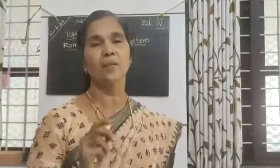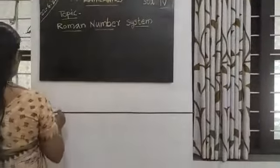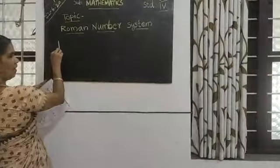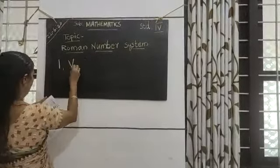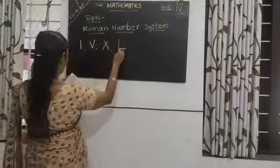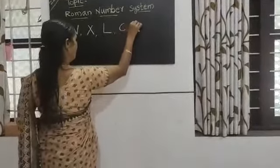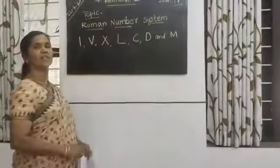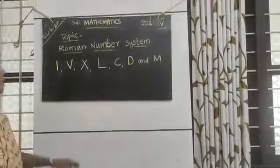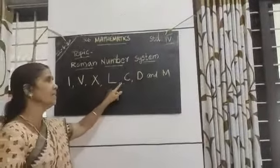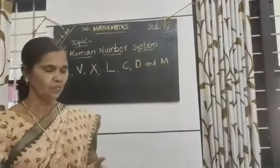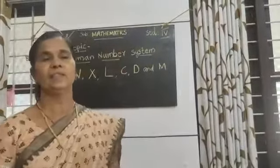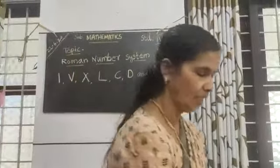The English alphabet letters used to write Roman numerals are: I, V, X, L, C, D, and M. These are all the letters used for writing Roman numbers. Now we are going to see which numbers these letters represent. I will show you.